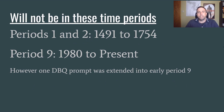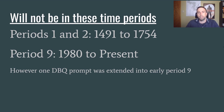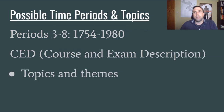The first thing we can do is eliminate some topics and time periods, because we know the College Board is not going to have the DBQ in those eras. The first two we can eliminate are periods 1 and 2, so 1491 to 1754. And the last one we can eliminate is period 9, 1980 to present. However, there was one year where a small amount of the prompt actually went into a little bit of period 9. So the possible topics and time periods the DBQ might come from include periods 3 through 8, so 1754 to 1980.